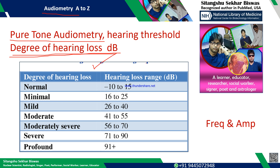This chart is provided by the World Health Organization. For a particular frequency, if the patient can hear sound between minus 10 to 15 dB, hearing is normal. If they hear within 16 to 25 dB, there is minimal hearing loss. 26 to 40 dB is mild hearing loss; 41 to 55 is moderate; 56 to 70 is moderately severe; 71 to 90 is severe; above 91 is profound degree of hearing loss.